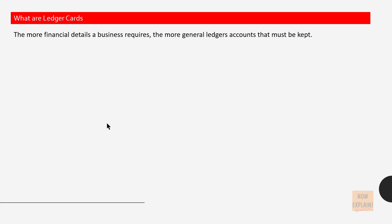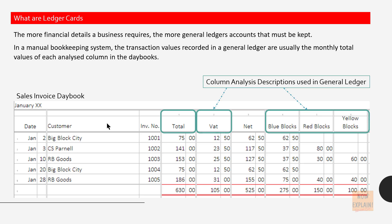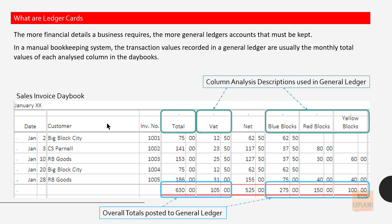The more financial details a business requires, the more general ledger accounts that must be kept. In the manual bookkeeping system, the transaction values recorded in the general ledger are usually the monthly total values of each analyzed column in the daybooks. Here we can see the column analysis descriptions used in the general ledger from the sales invoice daybook, and the overall totals will get posted to the general ledger which you will see at the bottom.